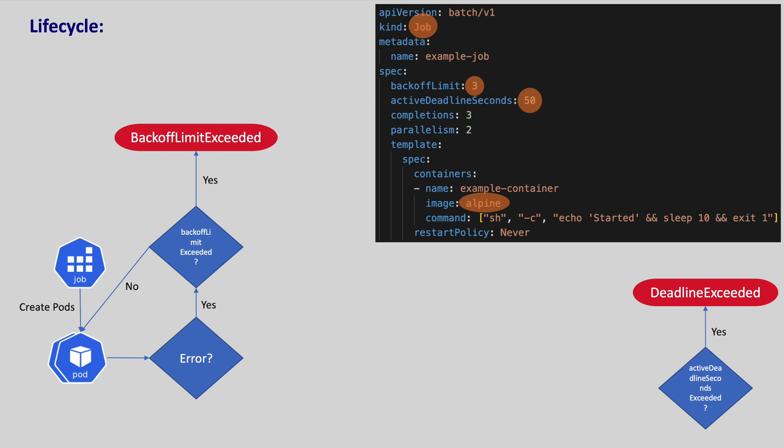Note that active deadline seconds takes precedence over backoff limit. If there are no errors in the pod, the job controller checks the number of pod completions, which we can give in the job manifest. With this, we are asking the job to run our pod at least these many number of times — similar to the replicas in a deployment. The job tries to spin up new pods until the required completions are met. When a specified number of successful completions is reached, the job will be marked as completed.